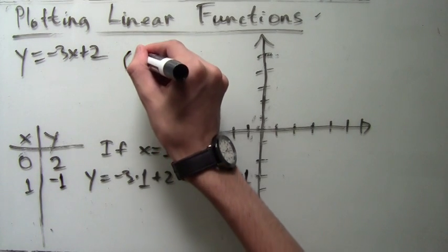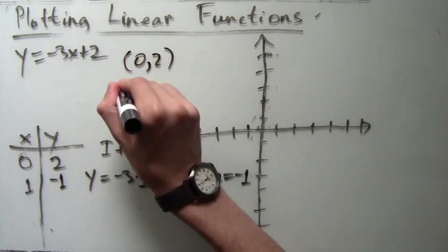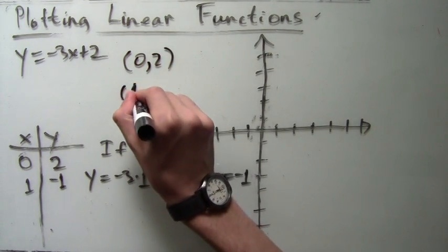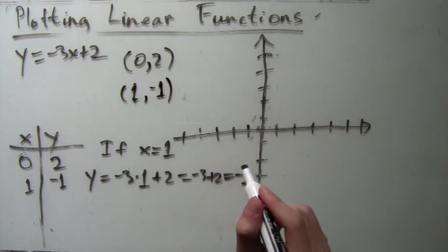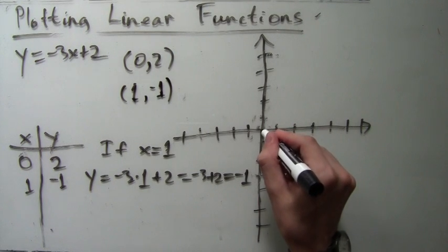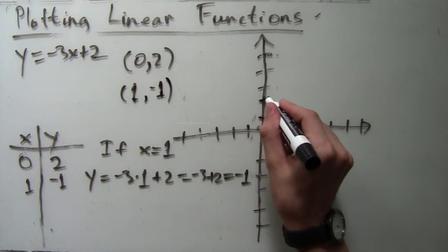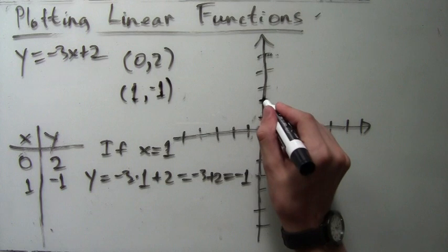The ordered pairs for the two points are then (0,2) and (1,-1). The first point is just (0,2), which is 2 above the origin. So here I'm drawing it.